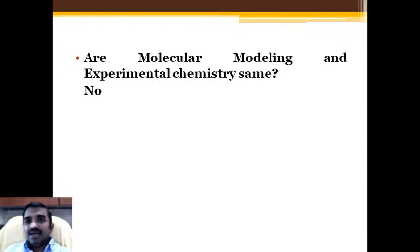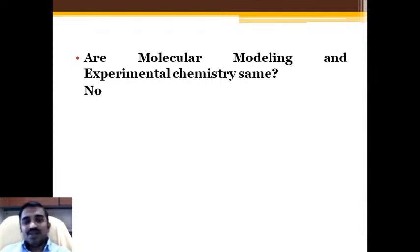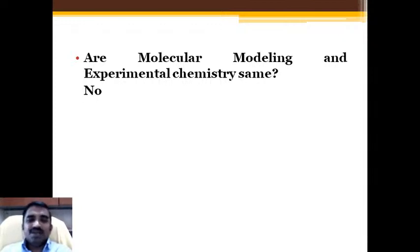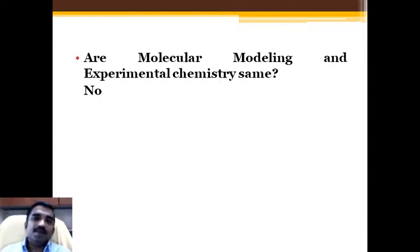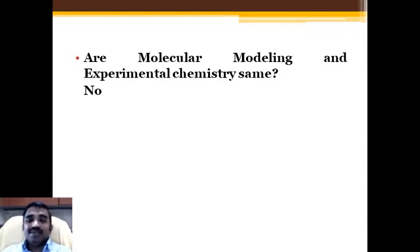We may go with precise calculations using molecular modeling with the help of computer software. Later, when you select a particular model and approve it using this computer software, that modeling will be checked using experimental chemistry. Experimental chemistry is needed to do the experiment in a practical way. Molecular modeling is a theoretical one, but it may give us a precise theoretical concept using computer software.